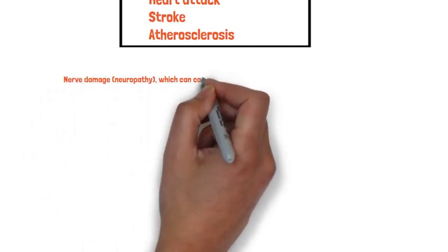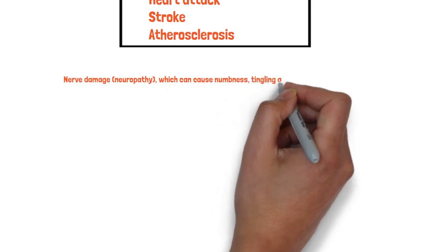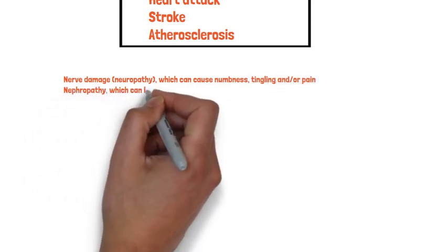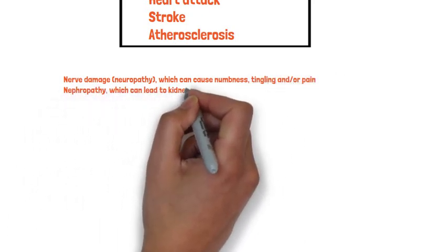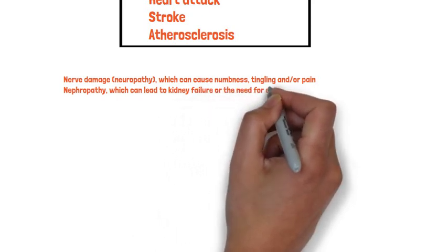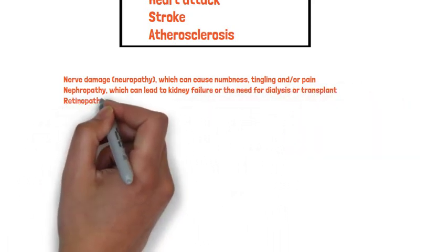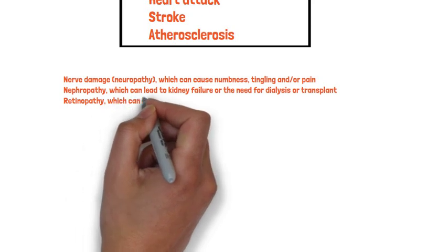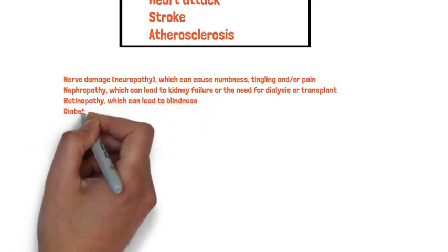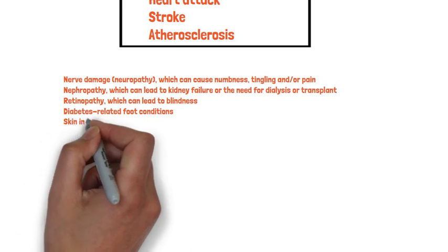Other long-term diabetes complications include nerve damage, or neuropathy, which can cause numbness, tingling, and pain. There is also nephropathy, which can lead to kidney failure requiring dialysis or transplant, and retinopathy, which can lead to blindness.